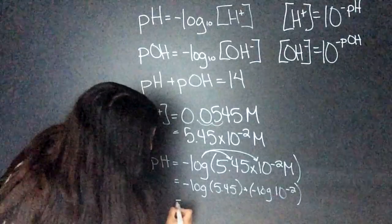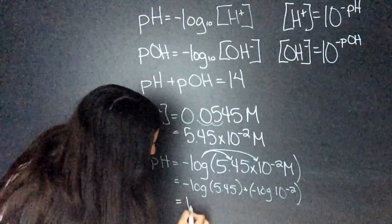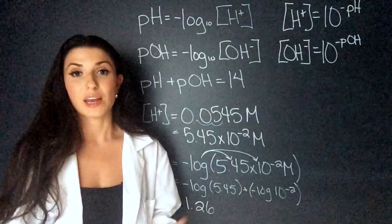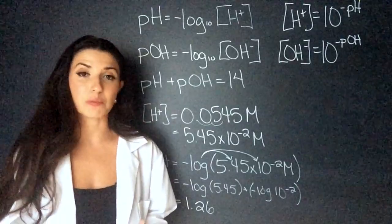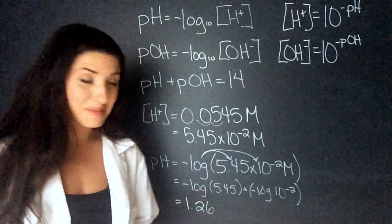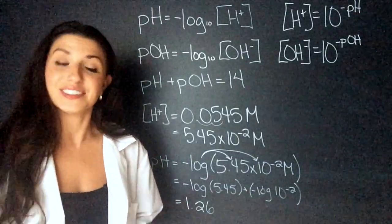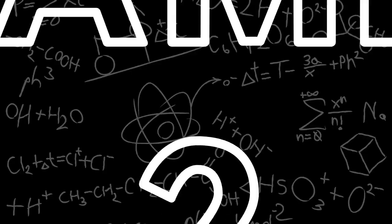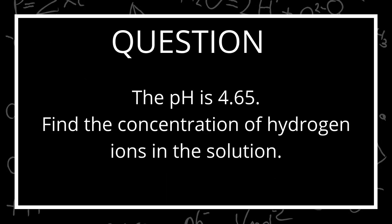When I plug this in, I get that the pH is going to equal 1.26. Now, remember the pH is supposed to be a number between 0 and 14. So, if you don't get a number like that, you did something wrong. The next question says that the pH is 4.65. Find the concentration of hydrogen ions in the solution.